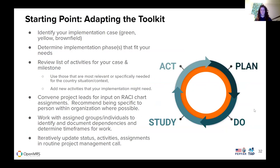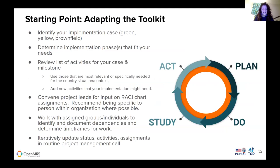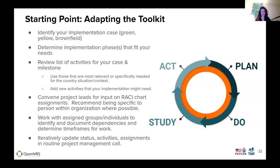Some best practices for adapting the toolkit: first, recognize where you are in your implementation case — are you a green field just starting, yellow field transitioning, or a brown field moving from one OpenMRS instance to another? Next, determine the implementation phase that fits your needs — are you in the planning, development, or implementation phase? Then review the list of activities for your case and milestones. Convene the project leads for input on the RACI chart — that's the responsible and accountable traditional project management approach where you assign different people different roles on a particular project plan.